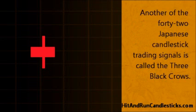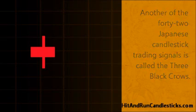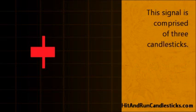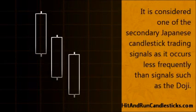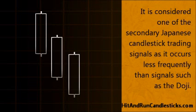Another of the forty-two Japanese candlestick trading signals is called the Three Black Crows. This signal is comprised of three candlesticks. It is considered one of the secondary Japanese candlestick trading signals, as it occurs less frequently than signals such as the Doji.